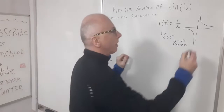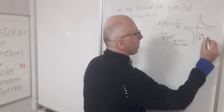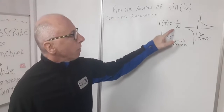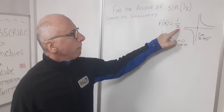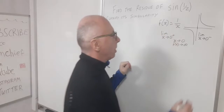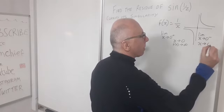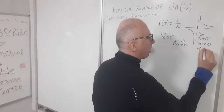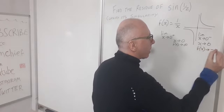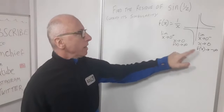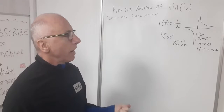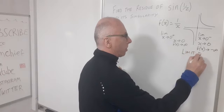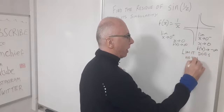Now what about the limit as x approaches zero from the negative side? As x approaches zero from the negative side, f(x) will approach negative infinity. Since these two limits are not equal as x approaches zero, this limit does not exist.